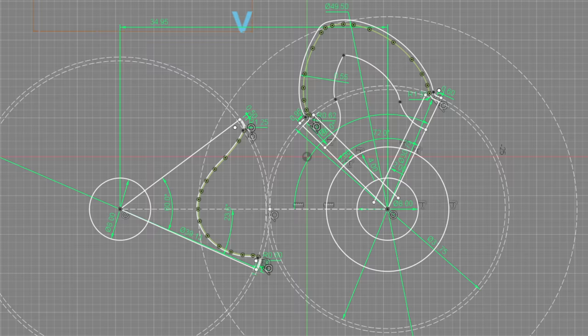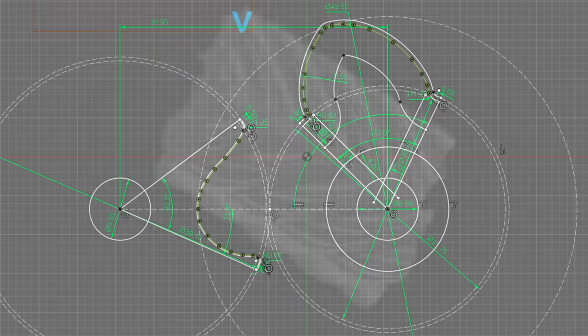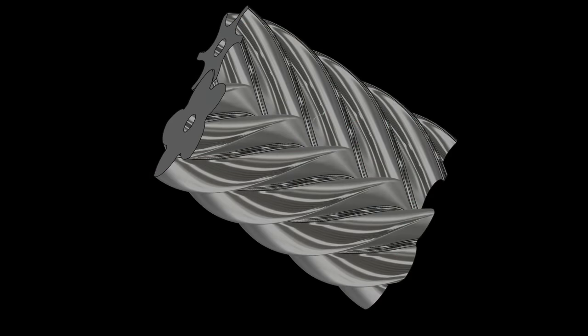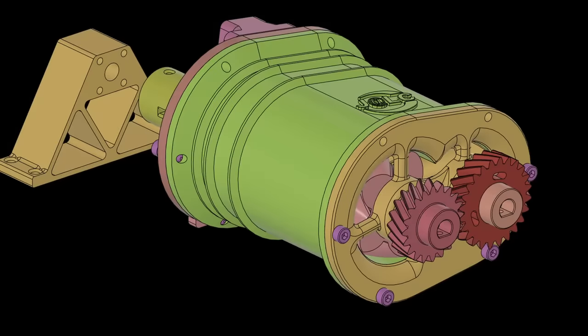Then, once I had the profile, it was a simple process of sweeping that profile along an axis to create the rotor itself. Now, because I didn't know how well this compressor was going to perform, I designed the most bare-bones compressor housing possible. The air is brought in directly axially at one end and exhausted axially at the other end.